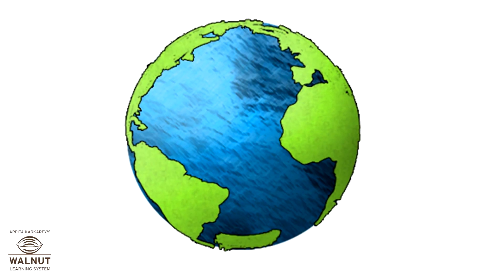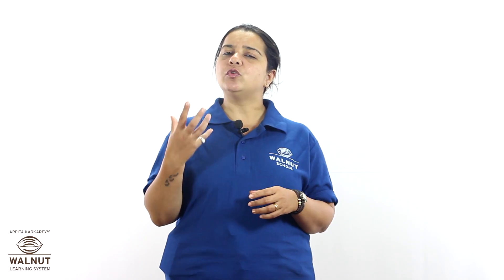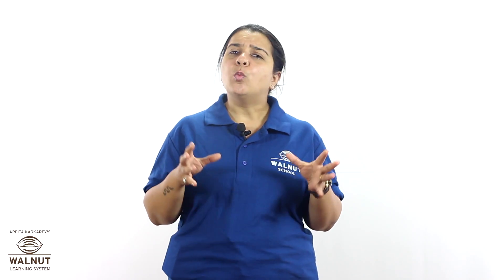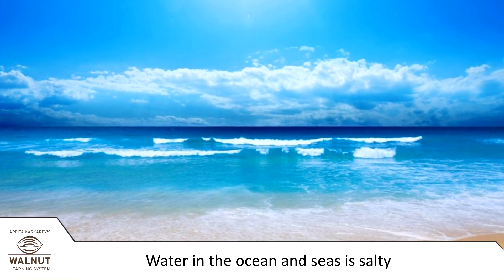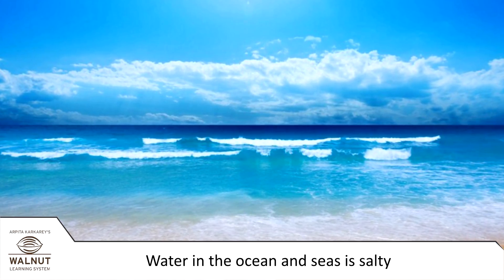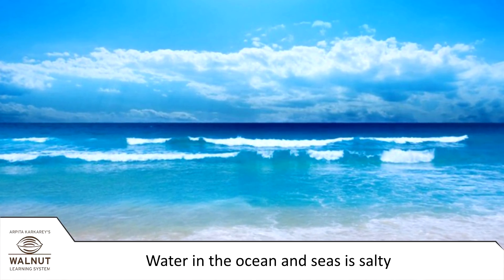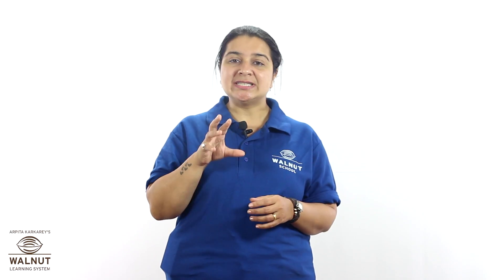The big patches of water that you see are all oceans and seas. So there are mostly oceans and seas on earth and we have lots of water. So why do we keep saying we have a water problem? That's because the water in the ocean and seas is salty. We cannot drink it, we cannot bathe in it, we cannot water crops, and we cannot use it in factories. So in those ways, the water in the oceans and seas is not really of any use to us directly.